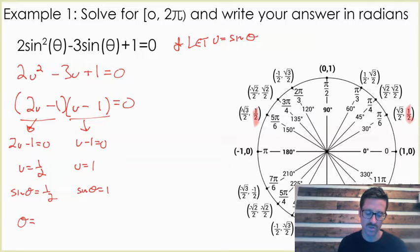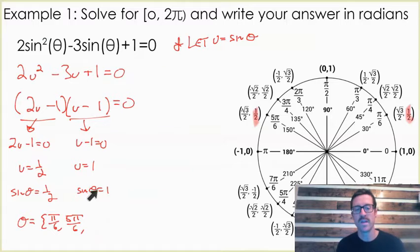So our theta, our solution to this, is π/6 and 5π/6. But then also this equation right here will yield a solution. If I look at this equation right here, then it's gonna yield the solution. Where is the y-coordinate equal to one? You see the y-coordinate's equal to one right there at π/2.